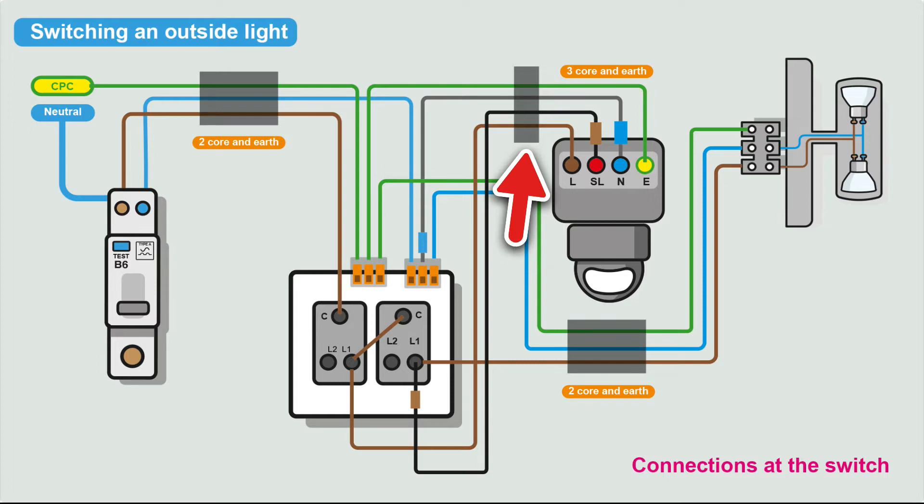In three-core and earth, you've got the brown, black, and grey. The brown would be a permanent live. The black would be a switch live, which you would add some sleeving to each end - some brown sleeving to indicate it's a live conductor, a switch live conductor. And the grey cable would be the neutral, which we would sleeve with blue to indicate that it is the neutral.